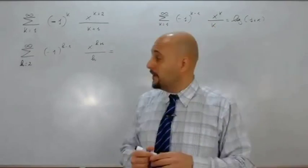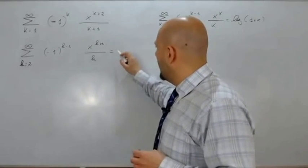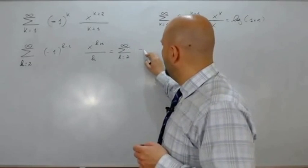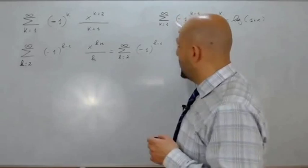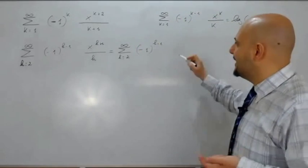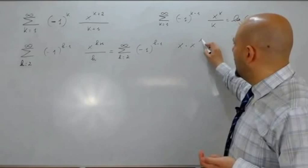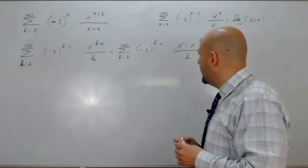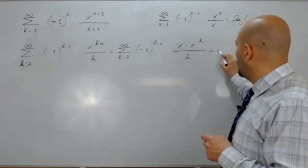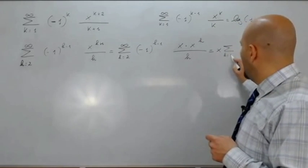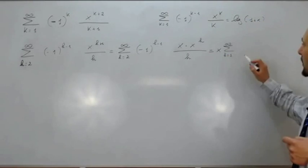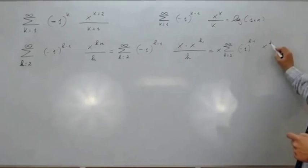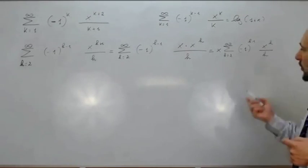Sommatoria per h che parte da 2 a infinito, di meno 1 alla h meno 1: è come la nostra serie modello. x alla h più 1 lo possiamo scrivere come x che moltiplica x alla h, per proprietà delle potenze, fratto h. Porto x fuori e scrivo sommatoria per h che parte da 2 e arriva all'infinito, di meno 1 alla h meno 1, per x elevato all'h, tutto fratto h.